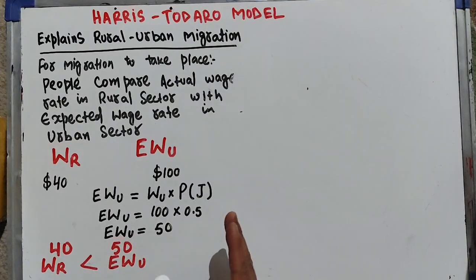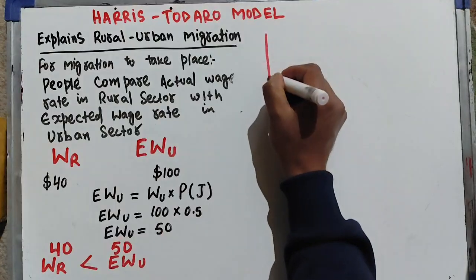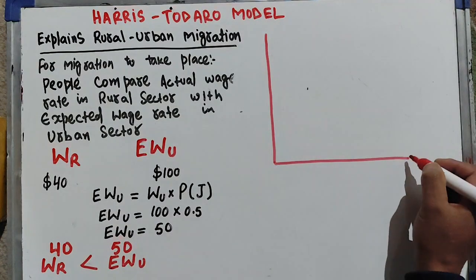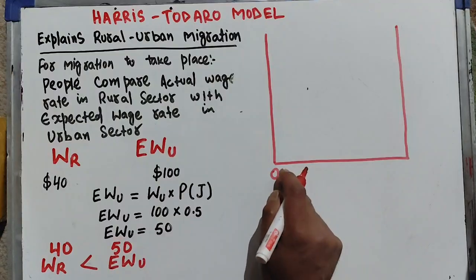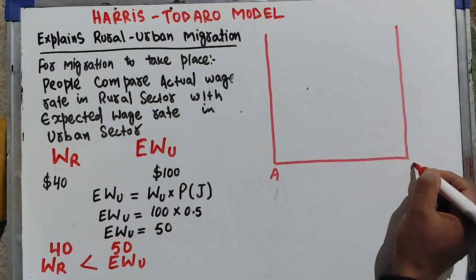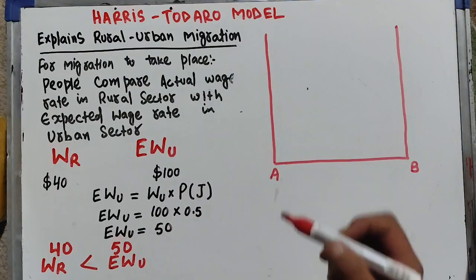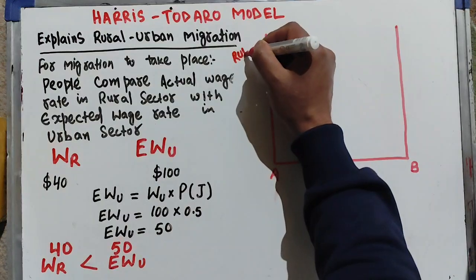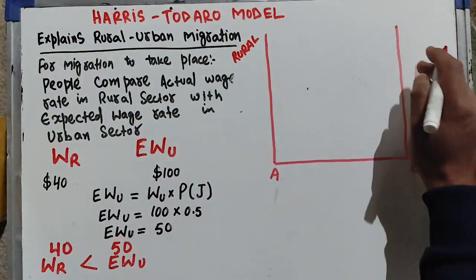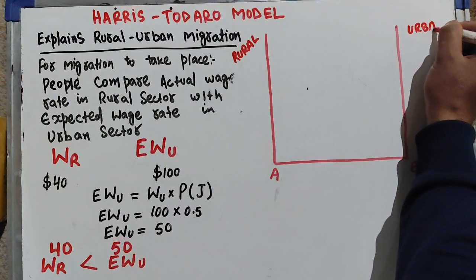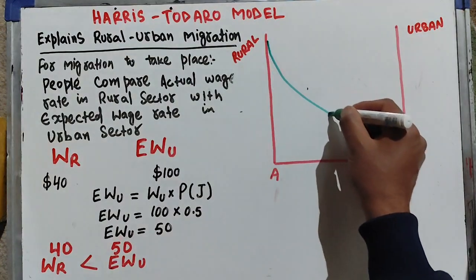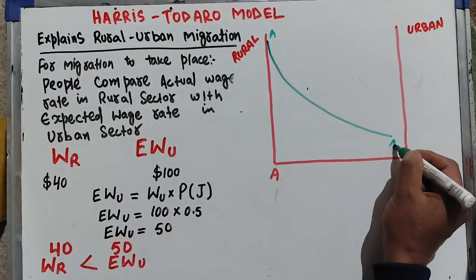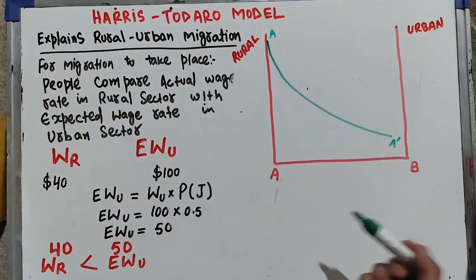Let me explain this diagrammatically. We have a diagram with two axes — one side shows the rural sector and the other side shows the wage rate in the urban sector. We draw a labor demand curve for the rural sector, let's call it AA prime, which represents the labor demand curve in the agricultural sector.